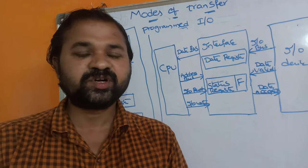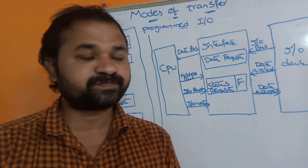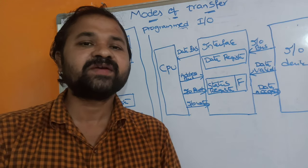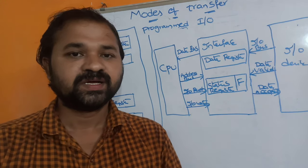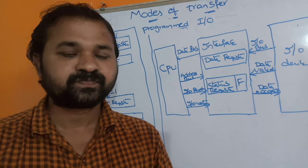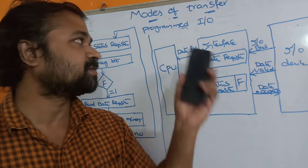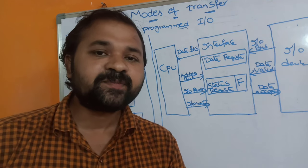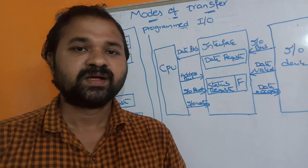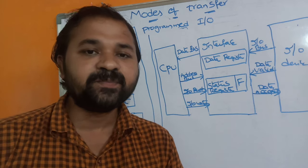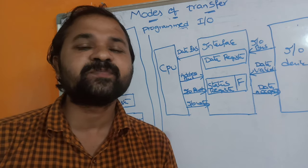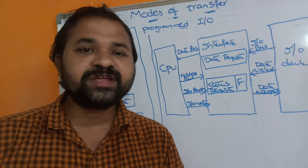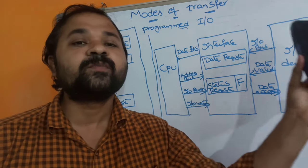Now let's see about modes of data transfer. We can transfer data between IO devices and memory using three approaches. The first approach is programmed IO. The second approach is interrupt initiated IO. The third approach is DMA, which stands for direct memory access. In this video we are going to discuss about programmed IO.